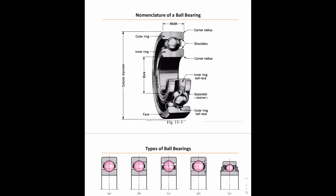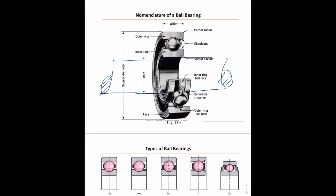Today we're going to talk about bearings. We can see here a schematic of a basic bearing — this is a normal ball bearing. We have the inner race and then we have the outer race or the outer ring. The inner race, or inner ring, is where the shaft would be connected or affixed to the shaft.